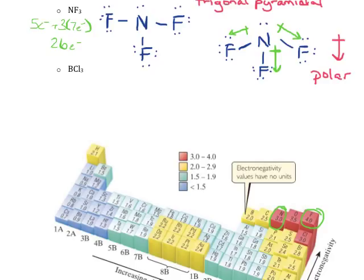Let's do the next one: BCl3. I'm going to do the same thing in terms of drawing the Lewis structure. Boron is going to bring three valence electrons, and each chlorine is going to bring seven electrons, giving a total of 24 electrons to work with. I'll assume boron is the central atom.